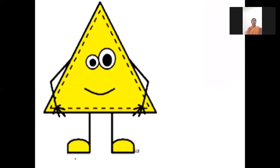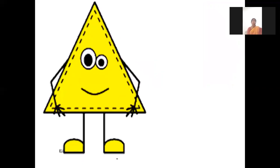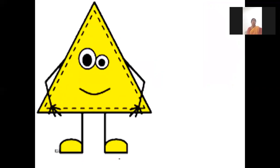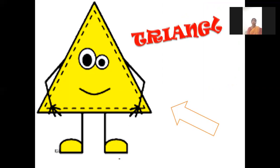Next shape: triangle. Which shape is this? Everybody repeat with me — triangle. There are three lines, three sides.